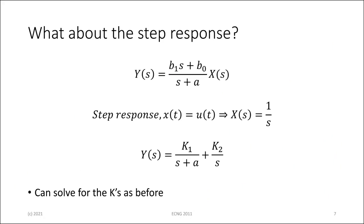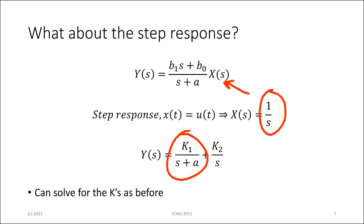So what about a step response for this? The step response — X(T) is a unit step — means X(S) is now one over S. So you put one over S in and do the same evaluation again. If you do this, you're going to get this as having a K1 over S plus A and a K2 over S.